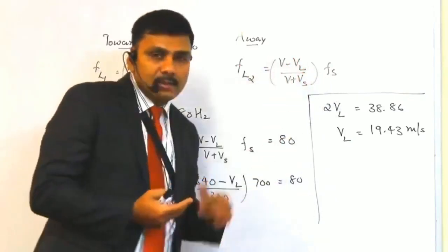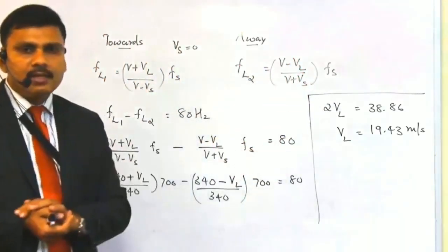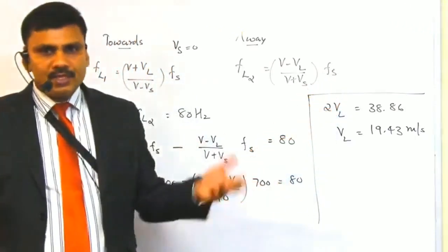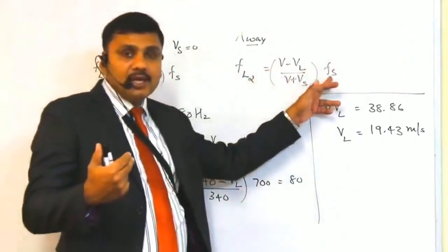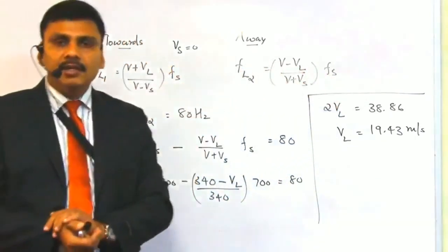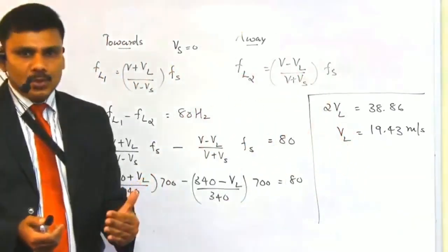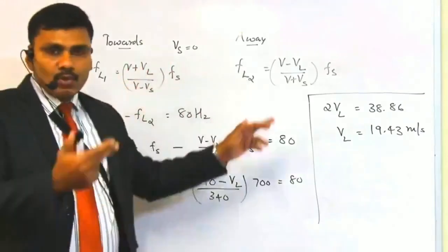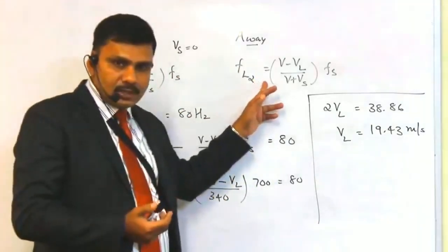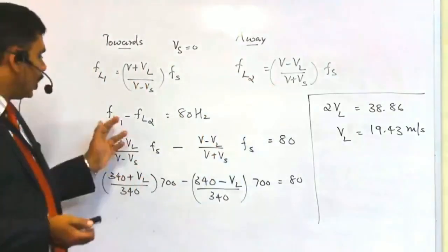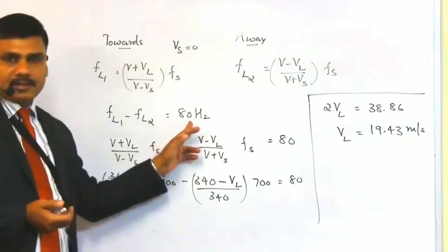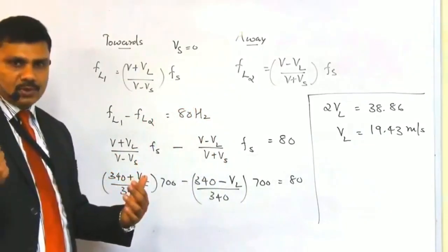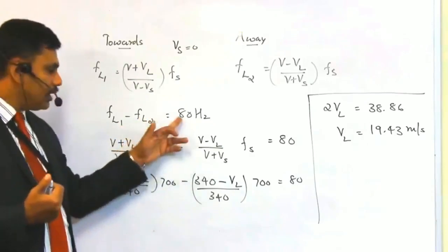In the second case, the car is moving away from the ambulance. The equation changes to: FL2 = (V − VL) / (V + Vs) × Fs. The numerator is minus because the frequency heard by the listener will be less than the actual frequency, since the listener is moving away from the source. The frequency difference between the two cases is given as 80 Hz.